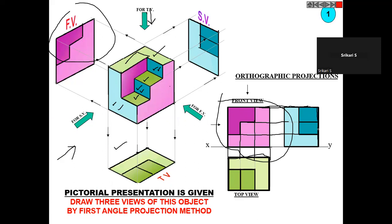Observe that this height, this height, and this height are all the same — meaning the front view height and side view height are both the same. Similarly, for the top view, the length of the front view and the length of the top view are also the same. That's why you project lines like this — it makes it easy to draw.